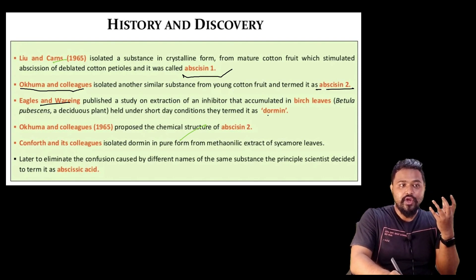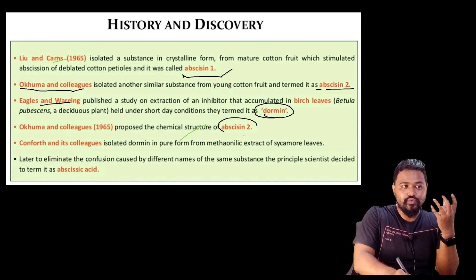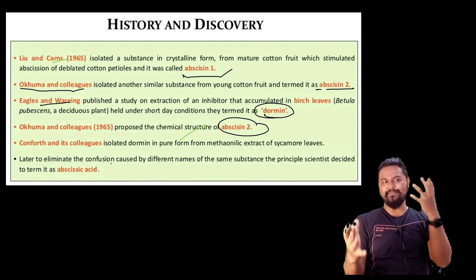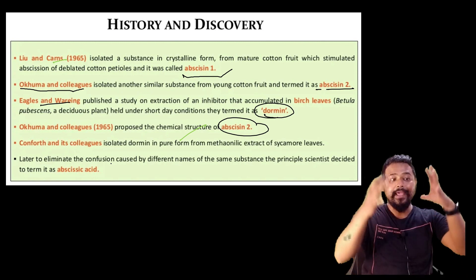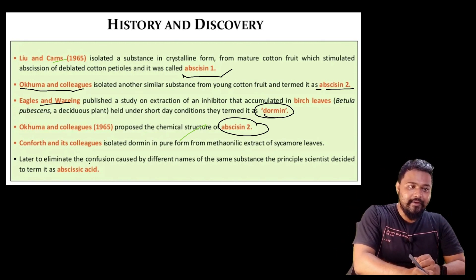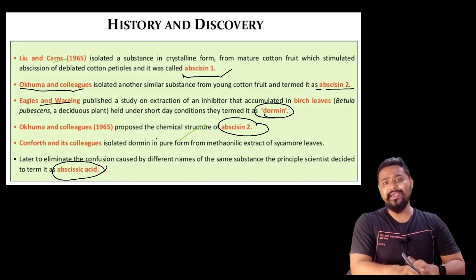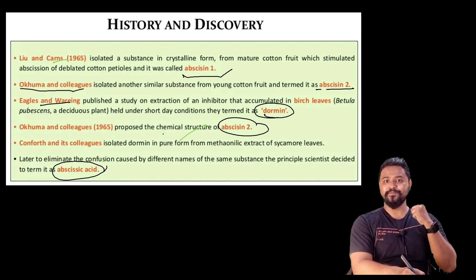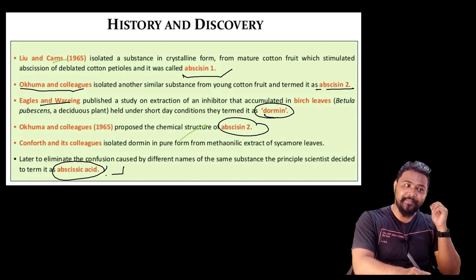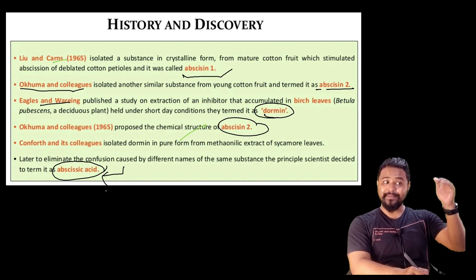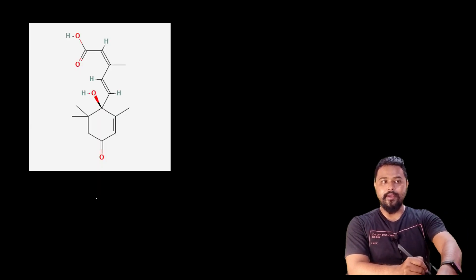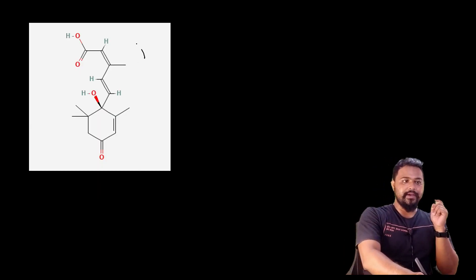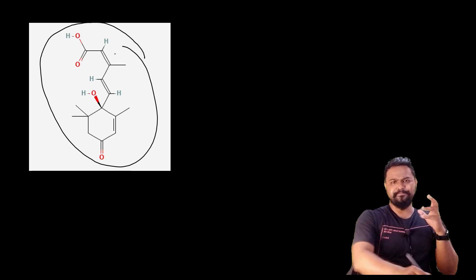When both groups published their papers, there was a conflict over naming — Abscissin 1 and Abscissin 2 were from different research groups. Finally, the chemical was given the unified name Abscisic acid. The structure of Abscissin 2 was then further characterized.